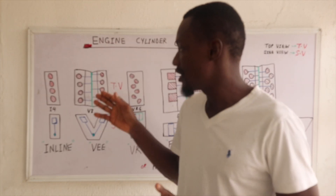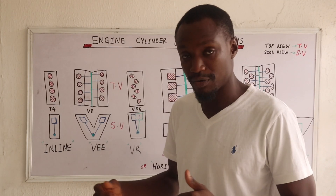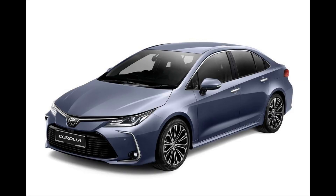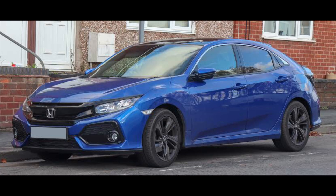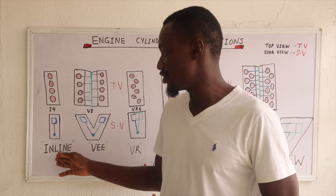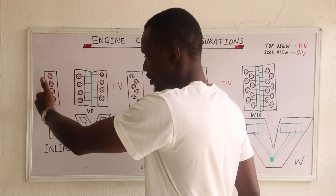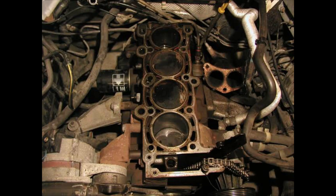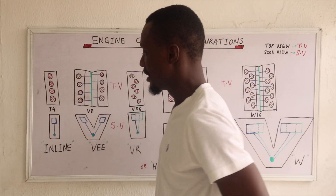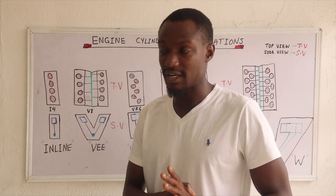I'll be starting with the most common configuration, which is the inline engine found in cars everywhere — our Corolla, our Accord, our Civic, our Fusion, our Prado. Almost all those cars use the inline engine. In the inline, your cylinders are arranged in a straight line. Looking at it from the side, you only see one piston. The inline is the most common cylinder configuration we have in our cars.